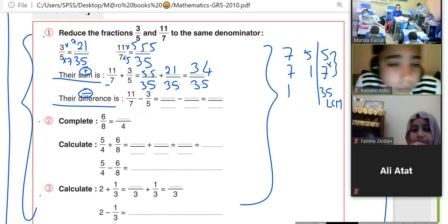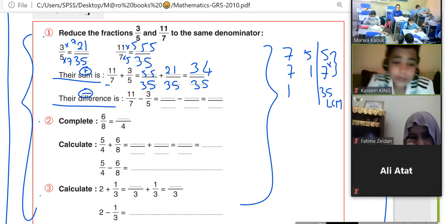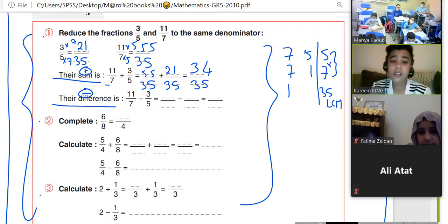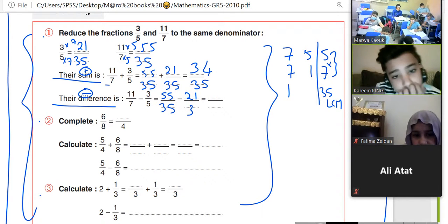Instead of 11 over 7, what do we write? 5 over 5. Wait a minute, Carrie. 55 over 35. Minus. Minus. Instead of 3 over 5, 21 over 35.